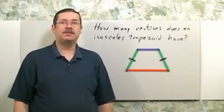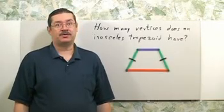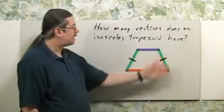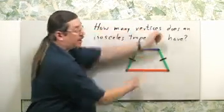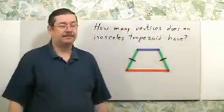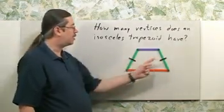To answer this question, imagine an isosceles trapezoid. Here's what one looks like. It has four sides. One set of opposite sides are parallel, and the other two sides are not parallel but they're equal in length, shown by these little tick marks.